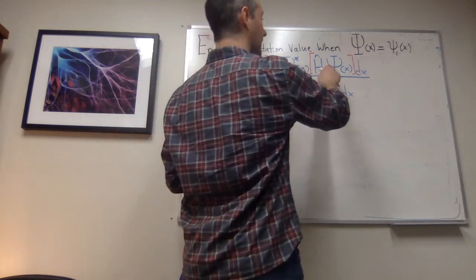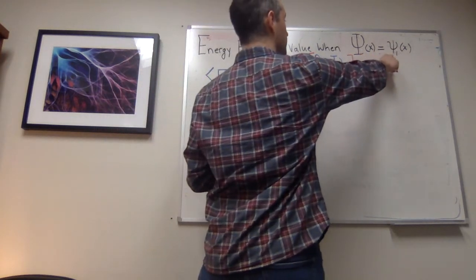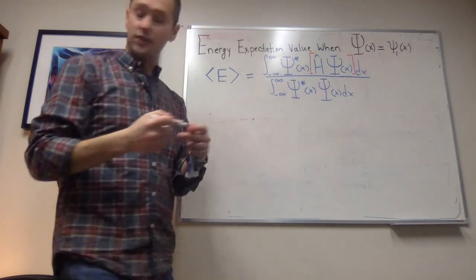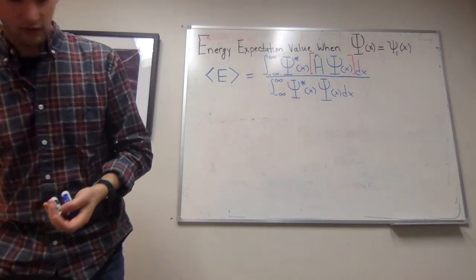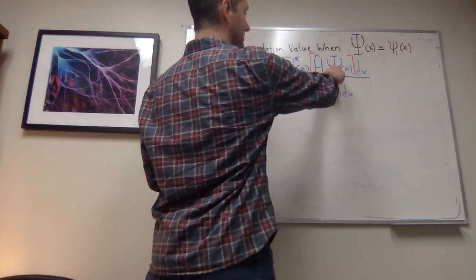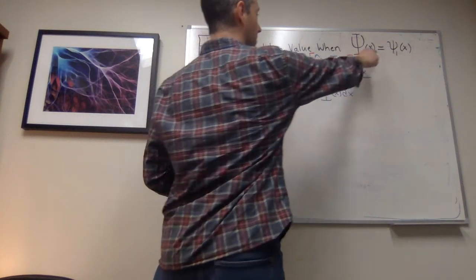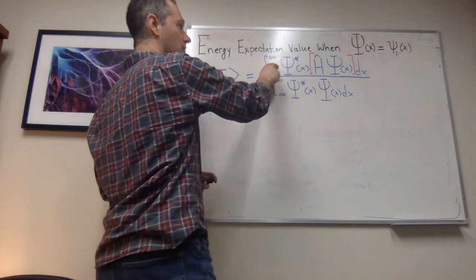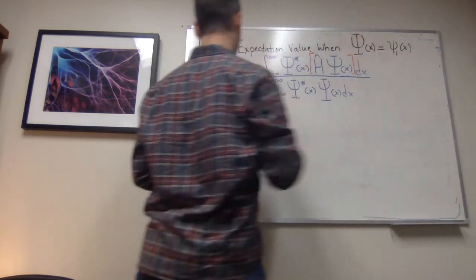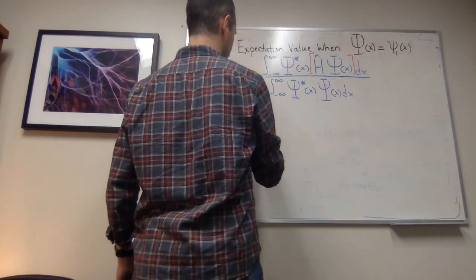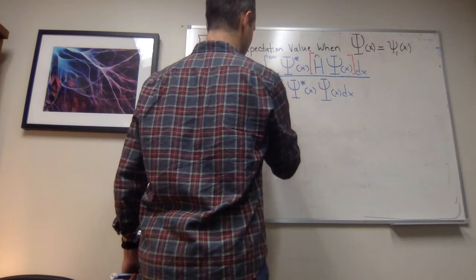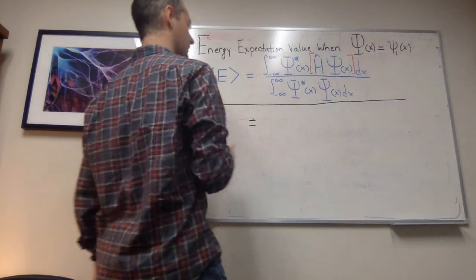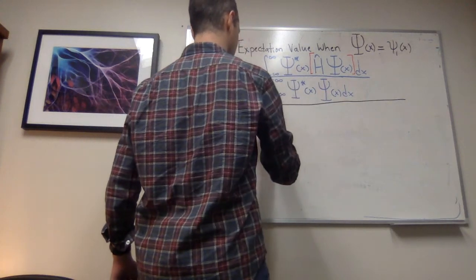We're in the case where big Psi(x) equals little psi_1(x) — we're in an energy eigenfunction. So the first thing we're going to do is make a substitution: everywhere we see big Psi(x) we write little psi_1(x), and everywhere we see big Psi-star(x) we write little psi_1-star(x). I'm going to rewrite this energy expectation value accordingly.